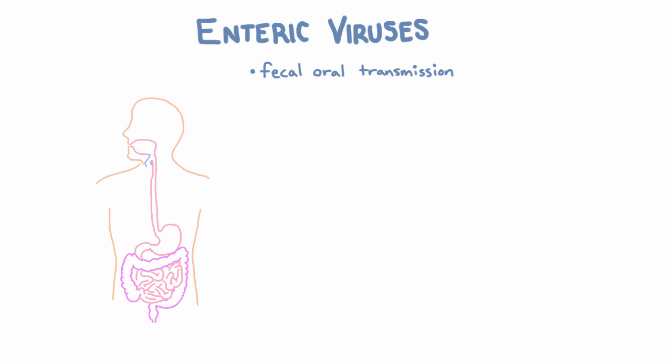Since these viruses come in through the top and go out through the bottom, they have to pass through the stomach, which means they have to be resistant to stomach acid. Many of them — although not all — don't have envelopes, and that actually makes them less susceptible to the acid.